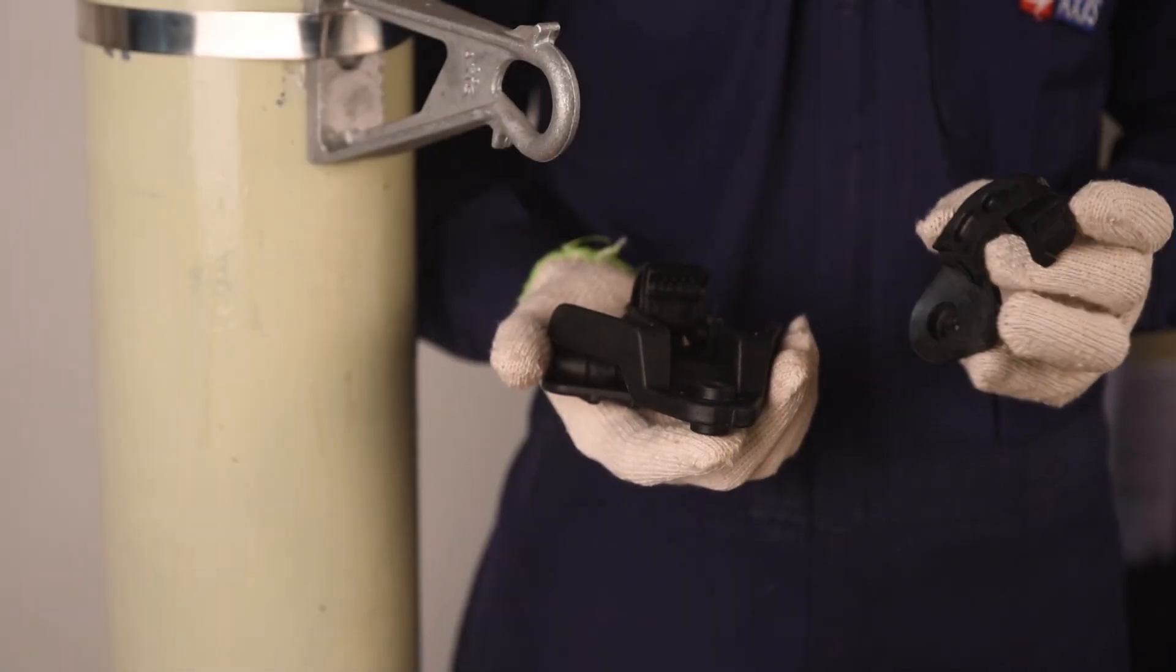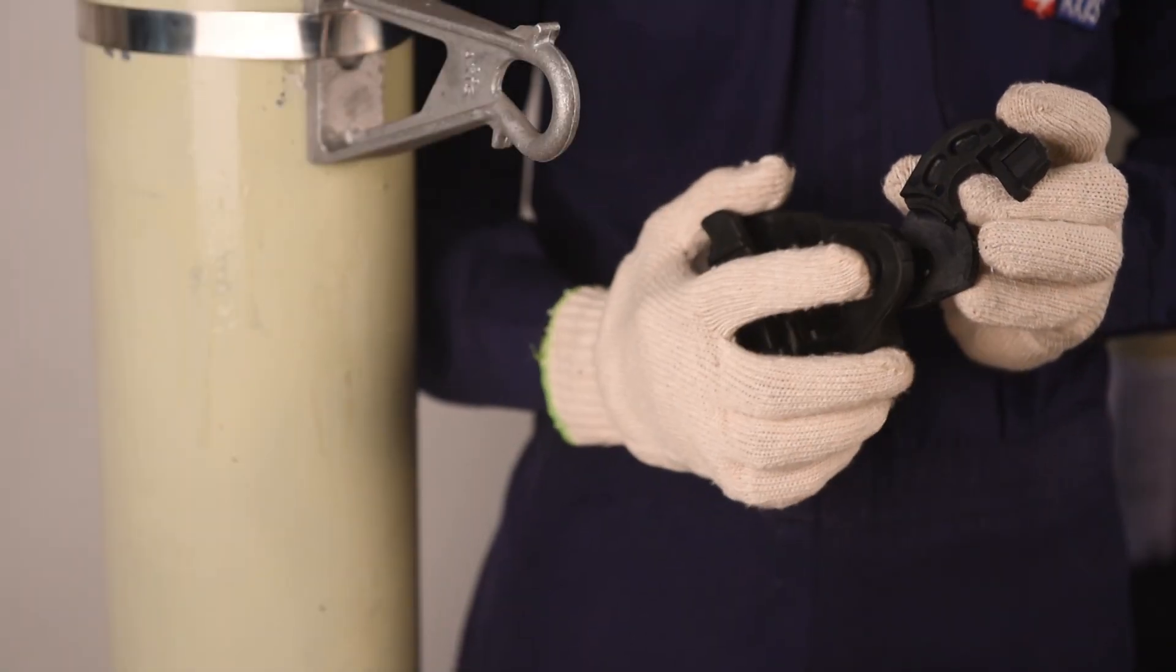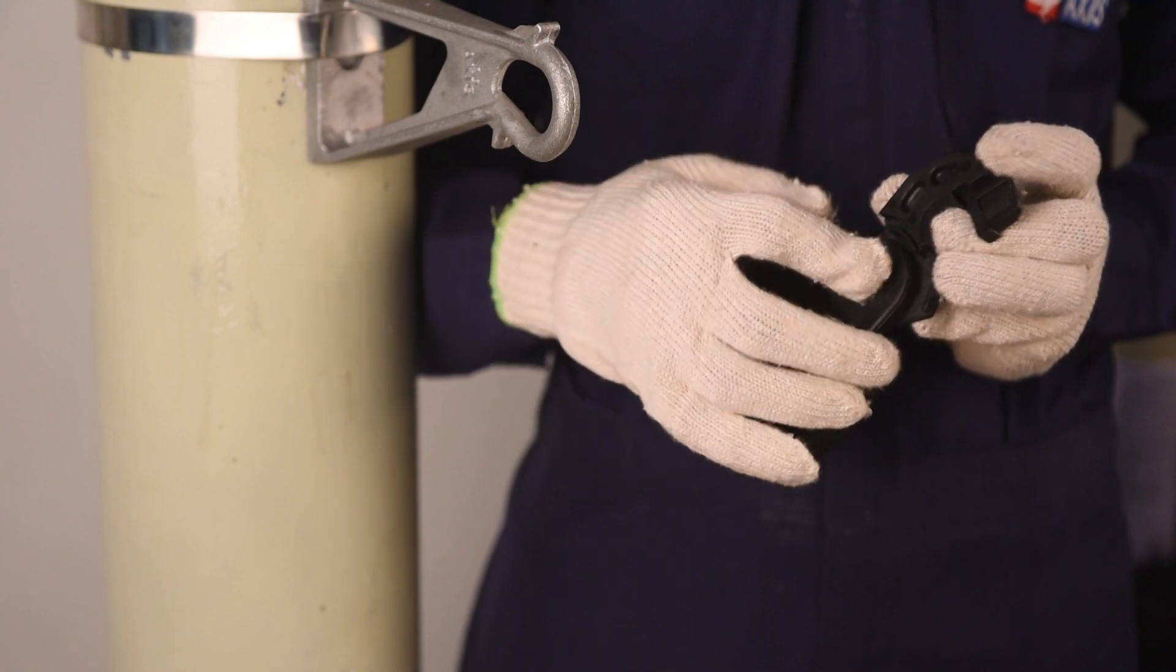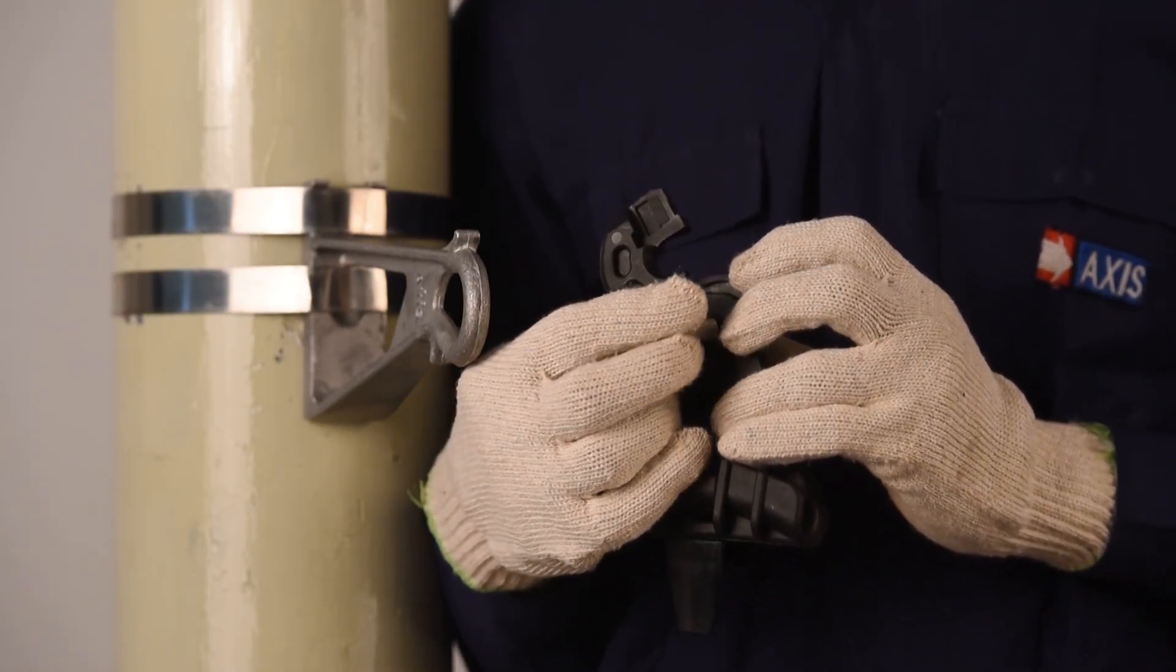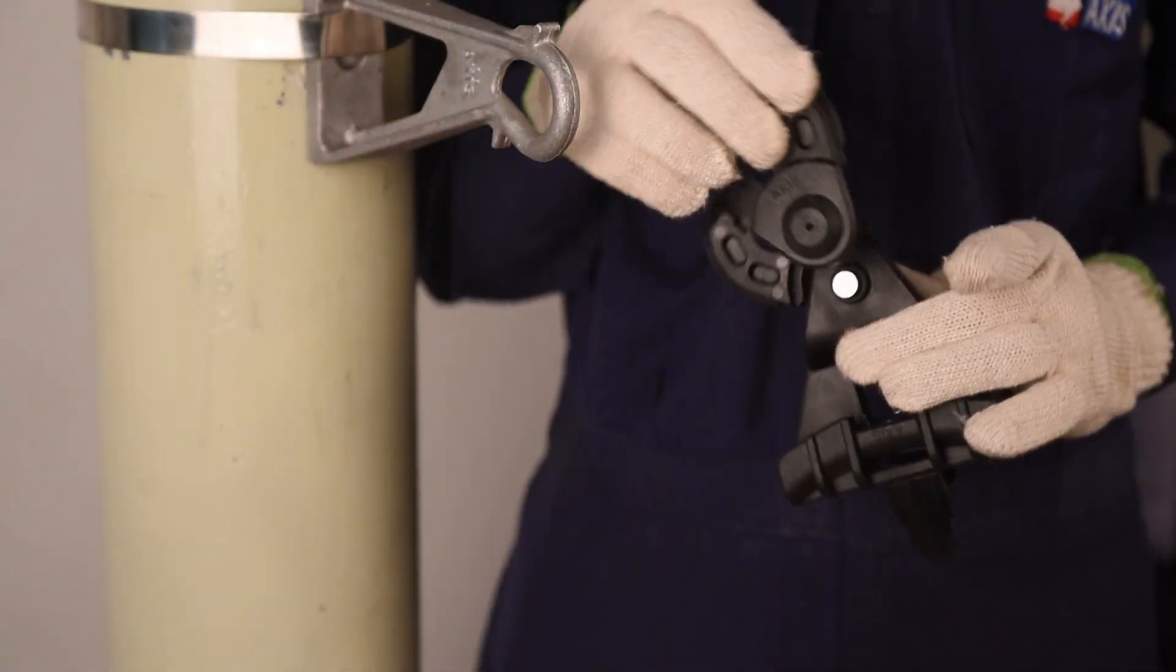Take one part of the movable link and insert the body into the movable link. Insert the pin into the hole and attach the second part to the body.